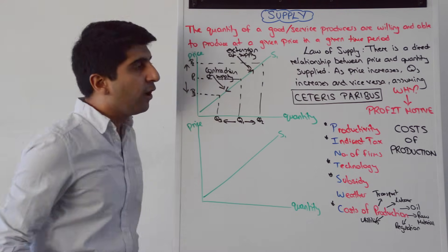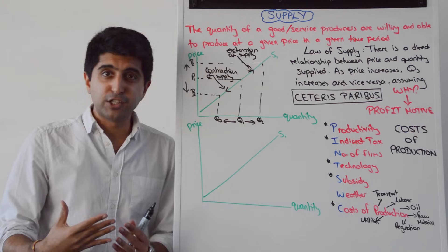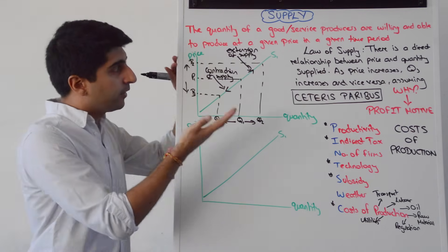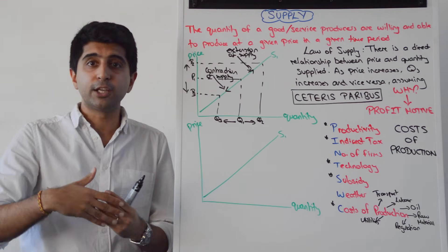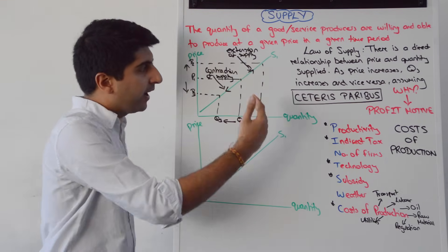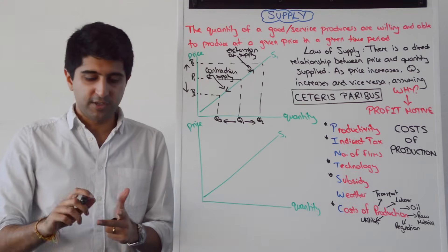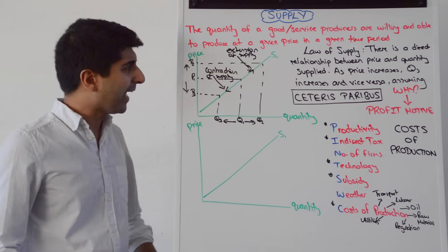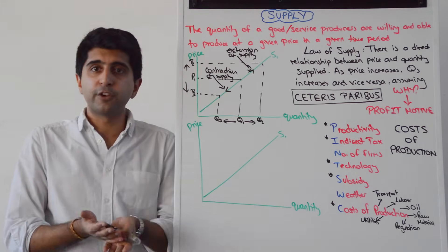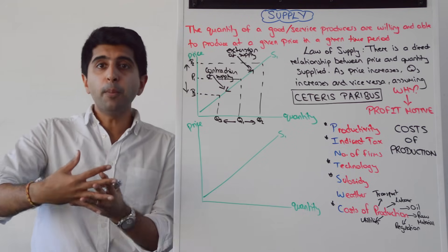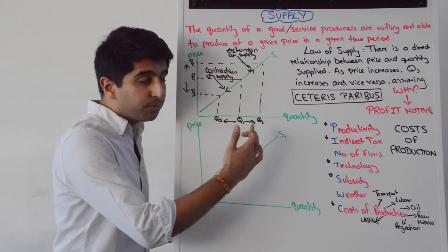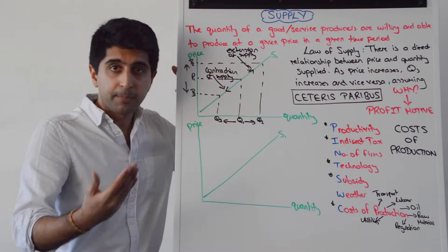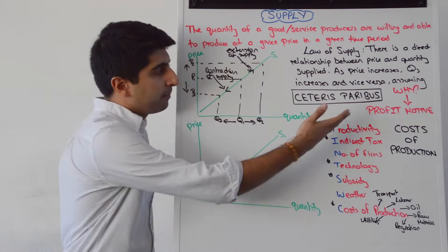But the key question is: why? Why is there a direct relationship between price and quantity supplied? Why do producers supply more when the price goes up? Well, very simply, because of the profit motive that private producers have. If the price goes up for a good or service, there is potentially more profit to be made if they can produce more and sell more. So there is a strong incentive when prices go up to produce more, to supply more — to make profit.